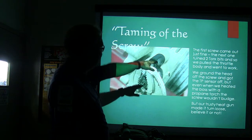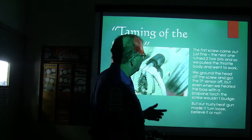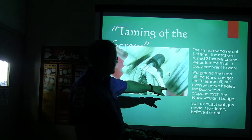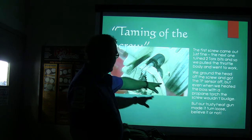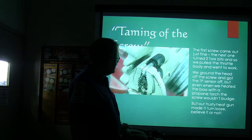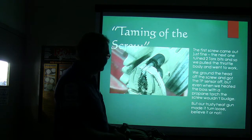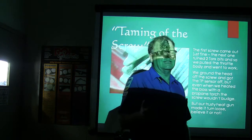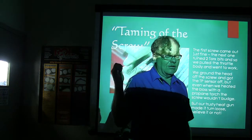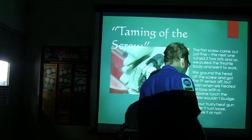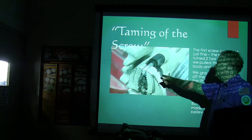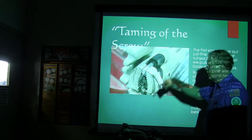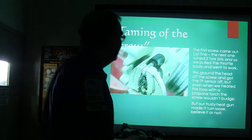The first screw came out fine, but the next one was ruined — stripped two Torx bits. We pulled the throttle body off, put it in the vise, ground the head off the screw, and got the TP sensor off. Even when we heated the boss with a propane torch the screw wouldn't budge. We got the heat gun, grabbed it, and finally worked it free.